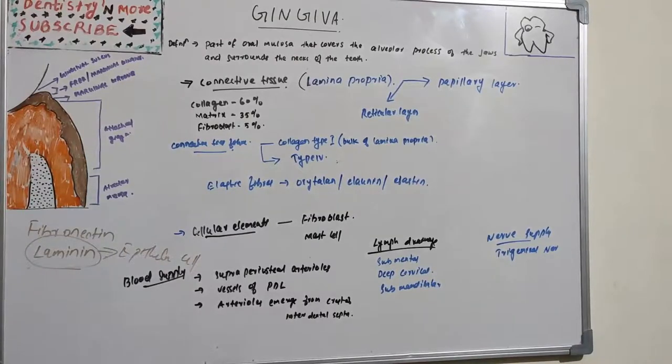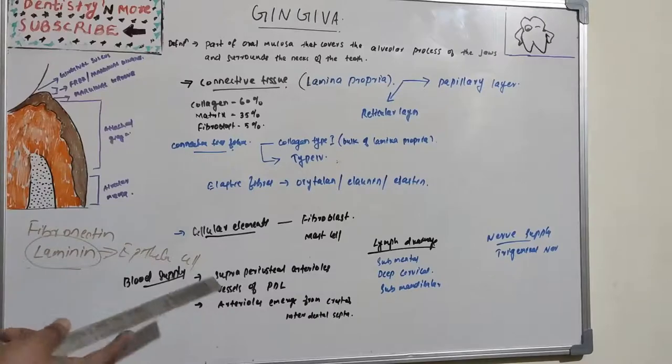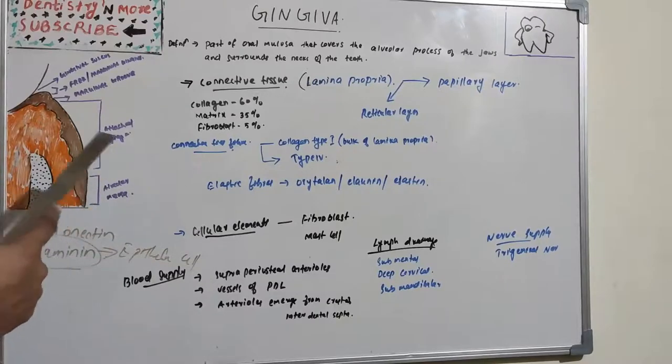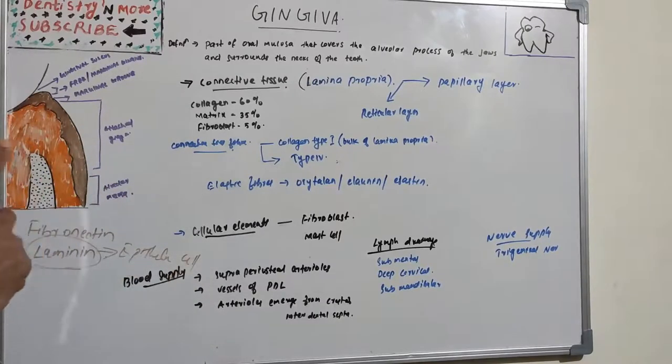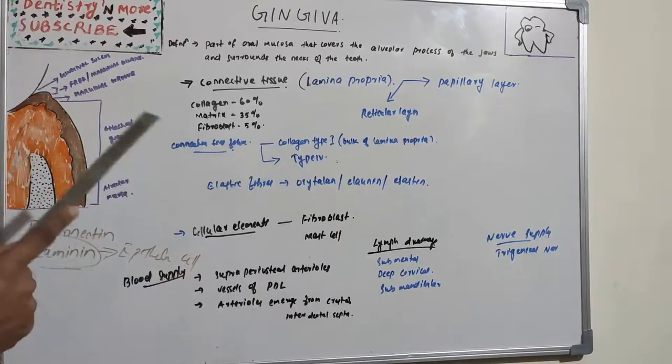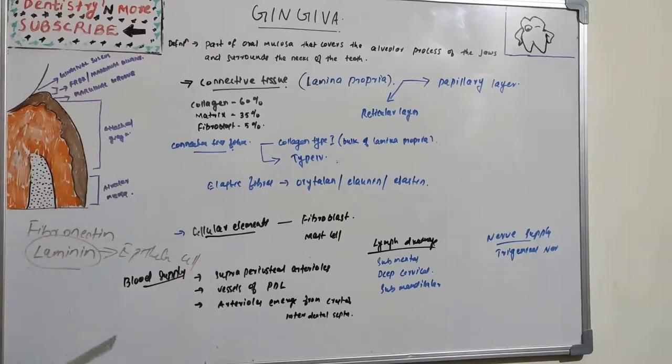Lymphatic drainage: from mandibular incisor region it goes to submental lymph node, from maxillary palatal gingiva it goes to deep cervical nodes, buccal gingiva of maxilla and buccal and lingual gingiva and mandibular premolar molar area goes to submandibular lymph nodes.